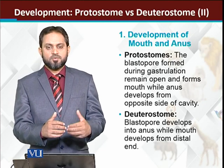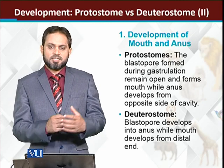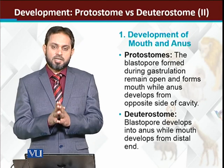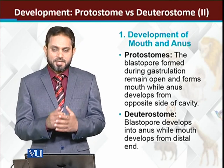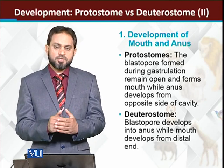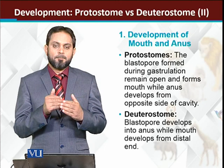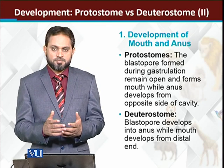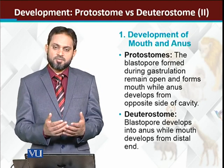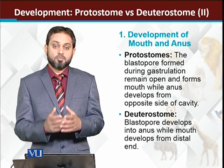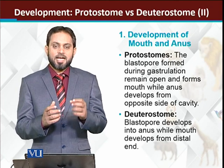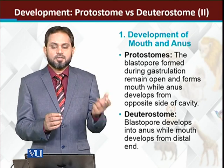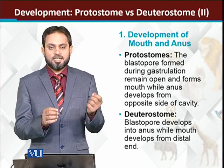The anus is developed from some other portion. In deuterostomes, the blastopore is converted into the anus, while the oral cavity develops from the distal end, which is the opposite end.